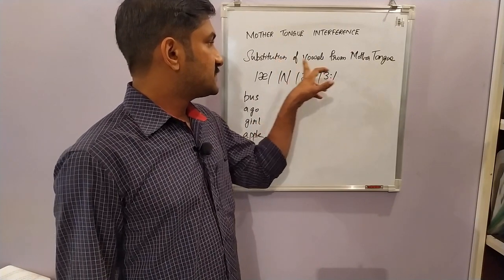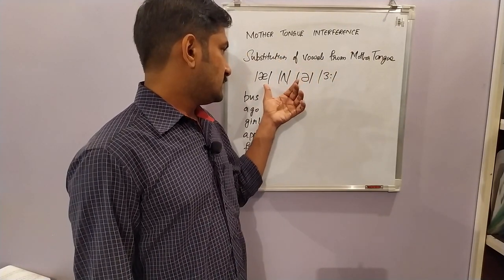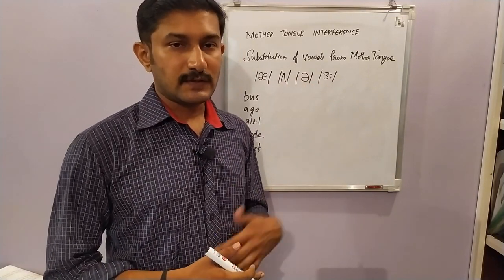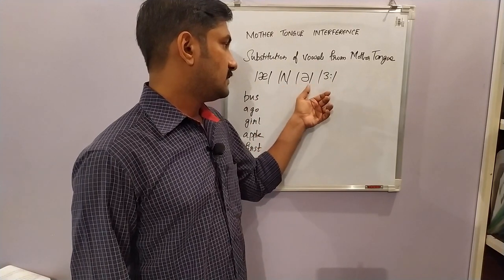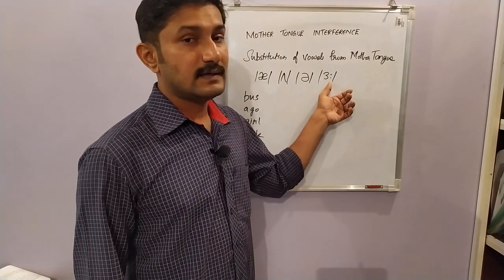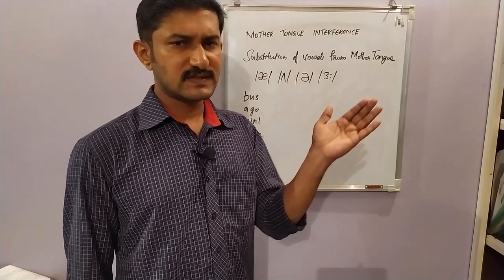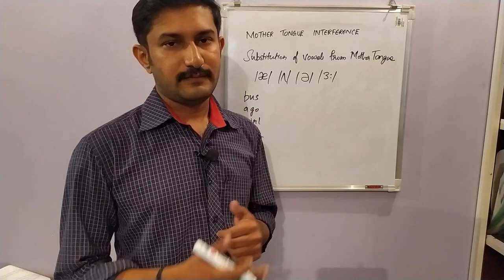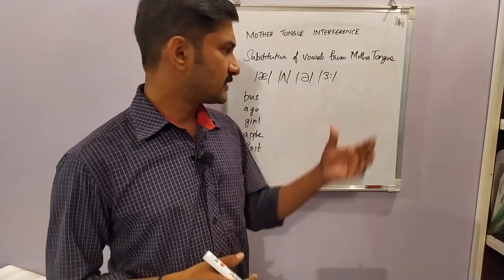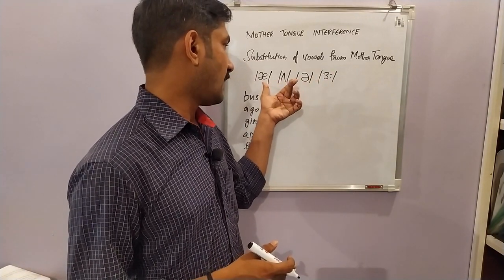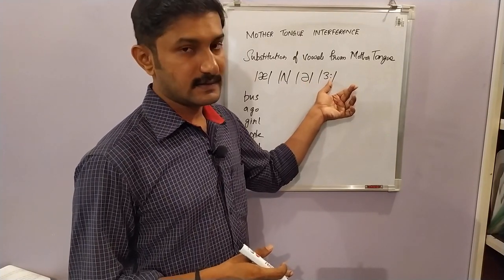The next common error is substitution of vowels from the mother tongue. There are some sounds which are not common in our mother tongue: the various 'a' sounds and certain 'oo' sounds. Other sounds like 'e', 'oo' are already there in our mother tongue and we don't have any problem with words having those sounds. But coming to the unfamiliar ones — the various 'a' and 'oo' sounds — let us look at some words having these sounds.